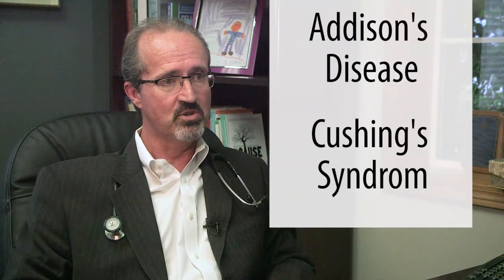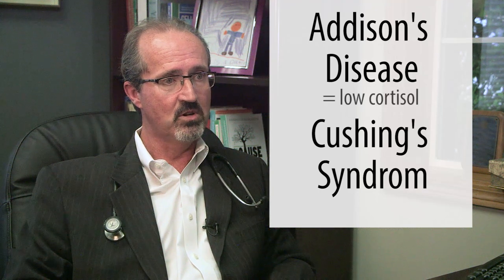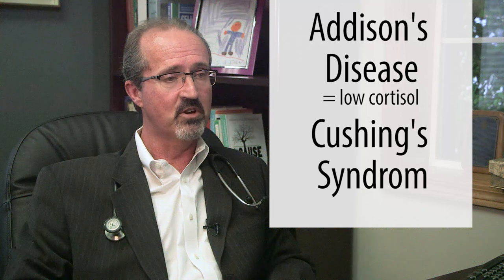Now oftentimes cortisol is tested for in a blood test and just tested in the morning. Now knowing that it should be different at different times of the day, just knowing what it is in the morning doesn't give you enough information to really understand what's going on. Sometimes cortisol is tested on a 24-hour urine test where you see the total cortisol production over the 24-hour period. That's a great test when you're looking for the extremes of cortisol abnormality which would be Addison's or Cushing's. Addison's is a disease where cortisol production is very, very low. Cushing's is a disease where cortisol levels are very, very high. Very unusual.